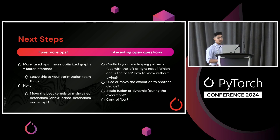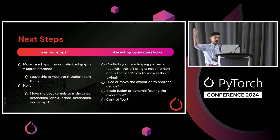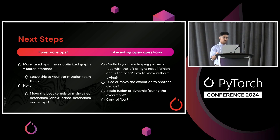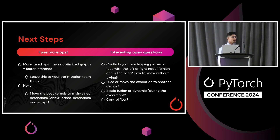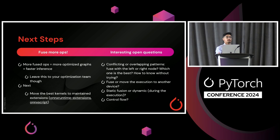There are still a lot of open questions after doing all this investigation. There were situations where multiple element-wise operations existed but you had to choose between fusing the left node or the right node — and that becomes a problem because these are massive graphs, a branching tree. How do I know which one's best? How do I know what node to fuse without going through the effort of doing it and running benchmarks? Fusing or moving execution to another device is another question. Looking at static versus dynamic fusion is another question, and of course control flow is always mind-boggling.